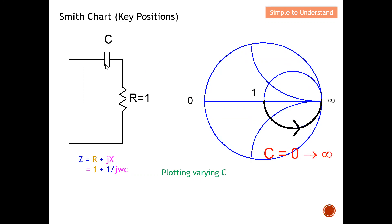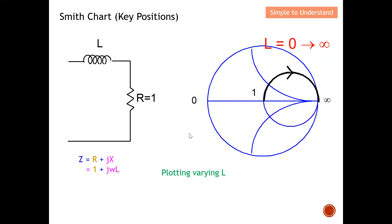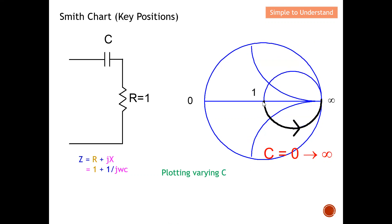Switching from inductor to capacitor — the capacitor has almost the same characteristics except it appears underneath the resistance line. The capacitor value changes from zero all the way to infinity, and based on the value you plot one of the points along the lower arc. So the key difference is: an inductor appears above the resistance line, and a capacitor appears underneath the resistance line.